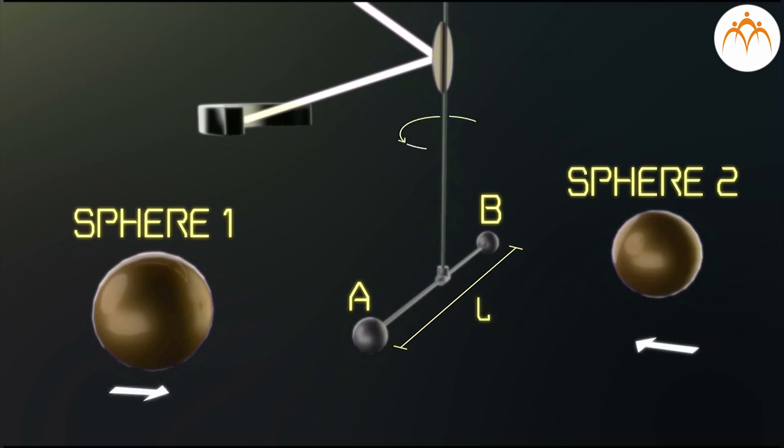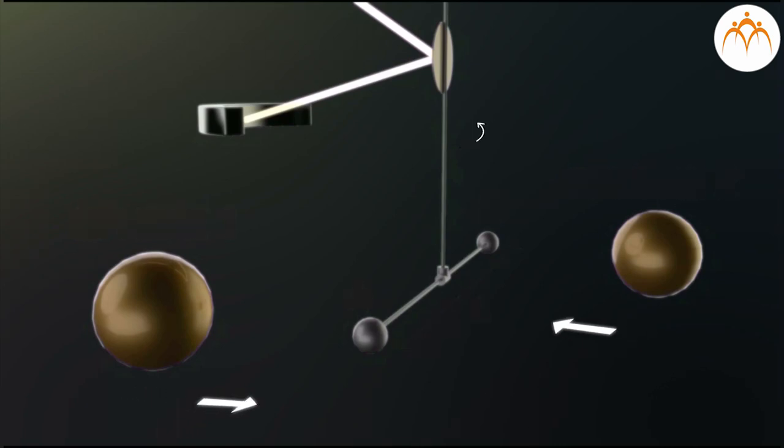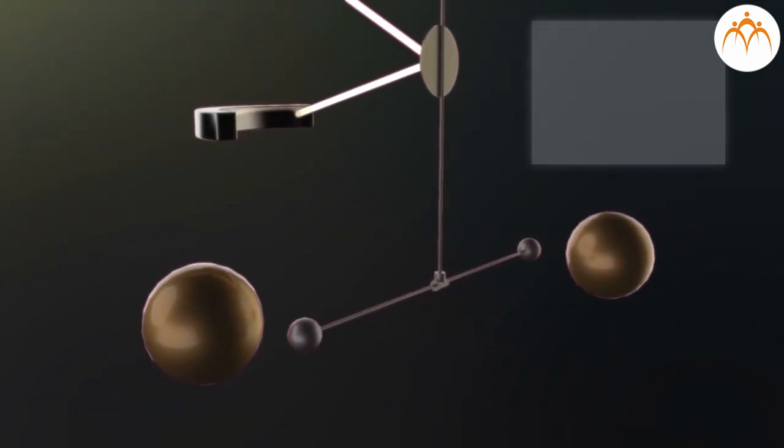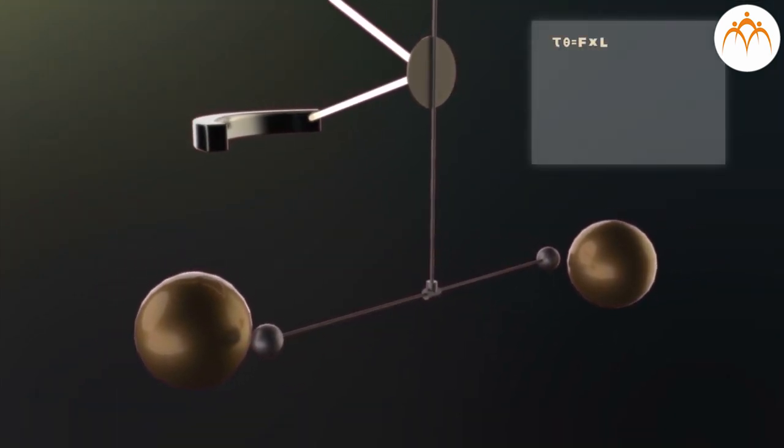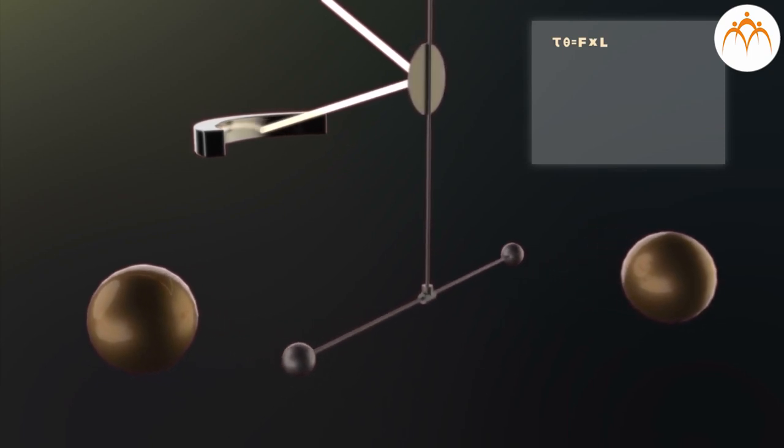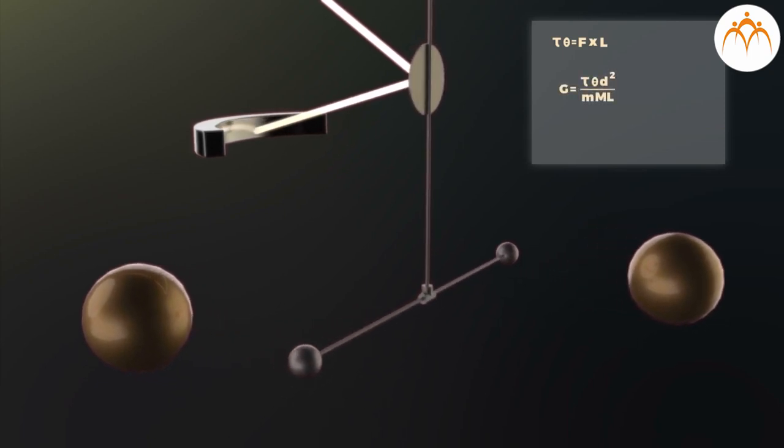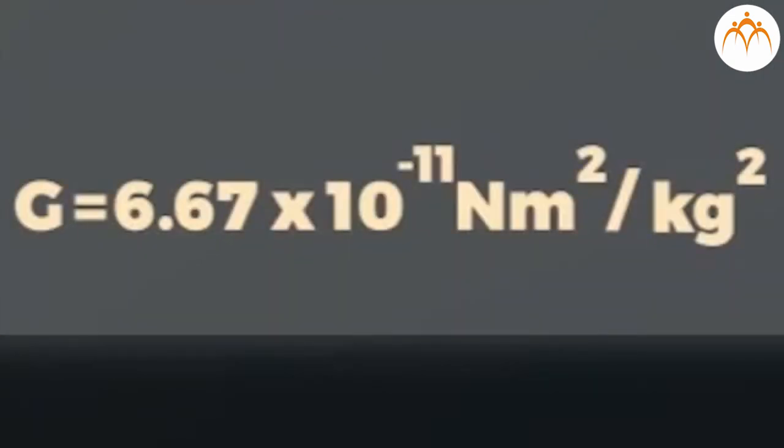To measure the angle of twist, reflection from a plane mirror attached to the torsion wire was used. Cavendish measured the angle and with the help of this angle, he could find the value of the gravitational constant given in your textbook as G equal to 6.67 × 10⁻¹¹ newton meter squared per kilogram squared.